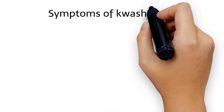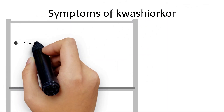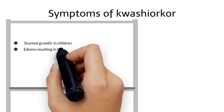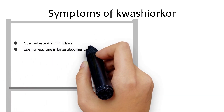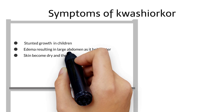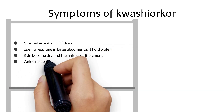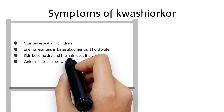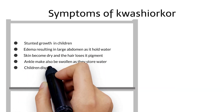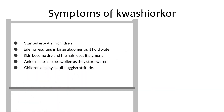Symptoms of Kwashiorkor: stunted growth in children; edema resulting in a large abdomen as it holds water; skin becomes dry and the hair loses its pigment; ankles may also be swollen as they store water.